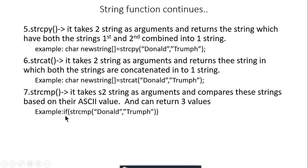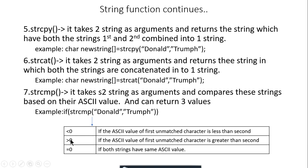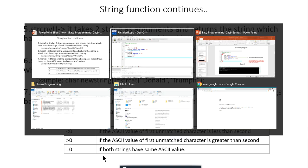strcmp compares two strings based on their ASCII values. You pass two string arguments and it produces three possible results: less than zero, greater than zero, or equals to zero. If both strings are the same it returns zero. If they differ, it compares character by character — for example 'D' has ASCII value 68 and 'T' has 84, so 'Donut' compared to 'Trump' returns less than zero, meaning Donut comes first alphabetically.